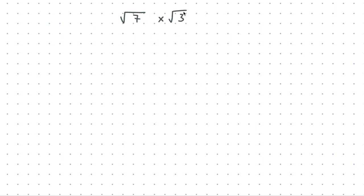Another example to practise: if we did root 7 multiplied by root 3. No matter what way you think of it — whether you like to use the index laws or prefer to keep them in surd notation — we're going to get the same answer. So we have 7 by 3 under one big square root, which is root 21.